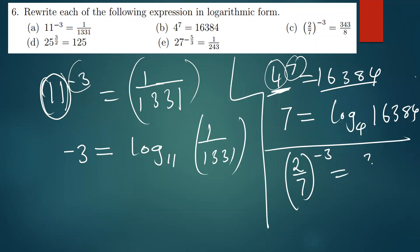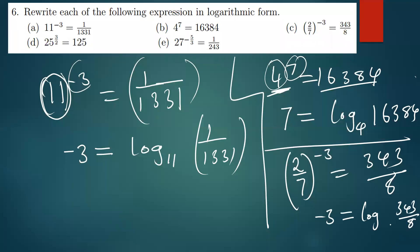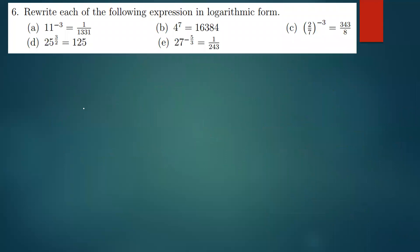We proceed to the next one, which is c: 2 over 7 raised to the power negative 3 equals 343 over 8. Converting to log form is simple: we write negative 3, which is our power, equals log of 343 over 8, with base 2 over 7.